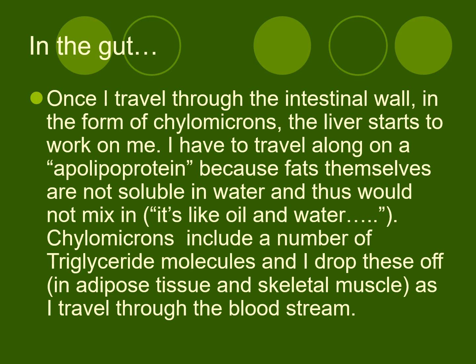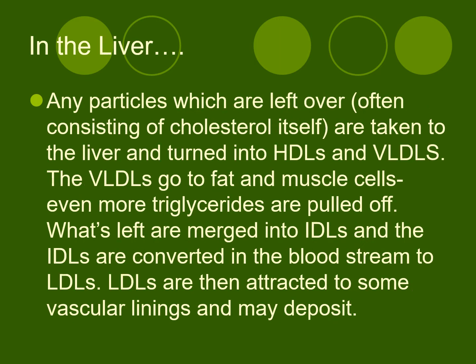Chylomicrons contain triglyceride molecules that drop off in adipose tissue and some skeletal muscle. The more carbs you consume, the more triglycerides you tend to form — you need fat and carbs together to create triglycerides. The fat is absorbed in the jejunum, passes through the liver, and all these particles are then processed predominantly into high-density lipoproteins and very low-density lipoproteins.